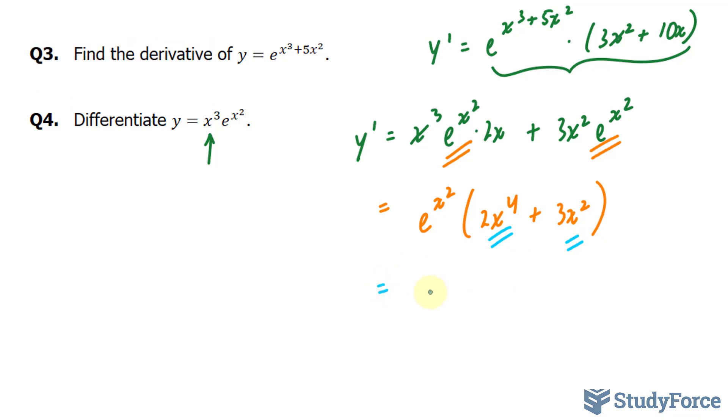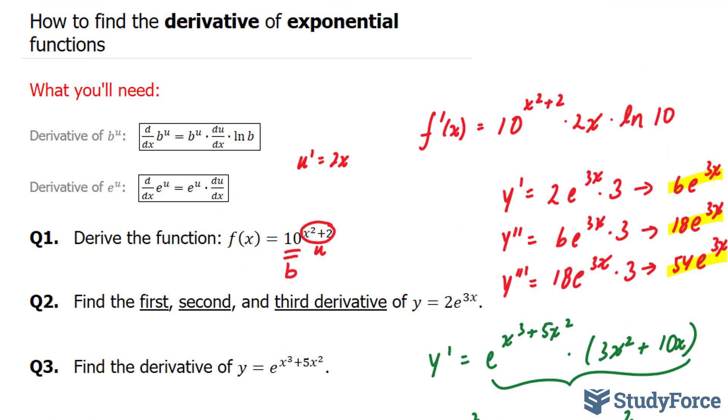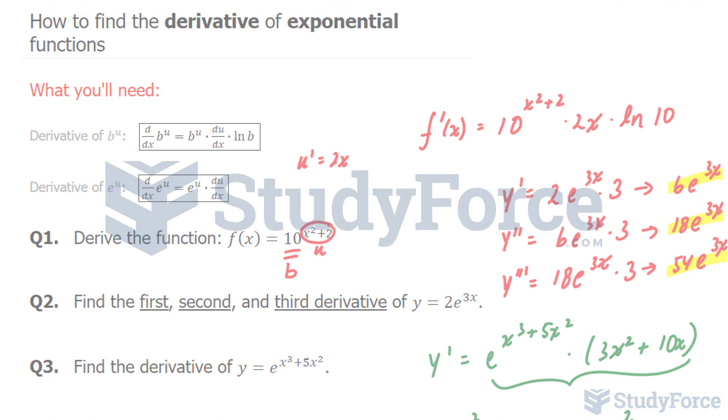You can also factor out x^2 from both of these. Let's see what happens if you do that. x^2 * e^(x^2) times (2x^2 + 3). And there you have it. Four examples on how to find the derivative of exponential functions.